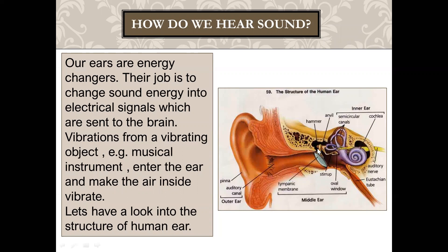These three bones are connected with the oval window, which connects the middle ear to the inner ear. The inner ear contains three semicircular canals — half of a circle is called semicircular. These semicircular canals are connected with a coiled structure called the cochlea, which is the actual organ of hearing.